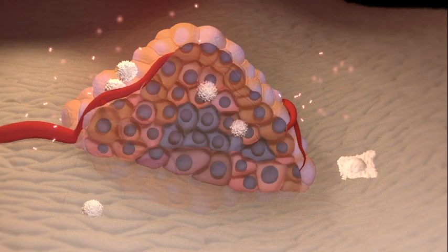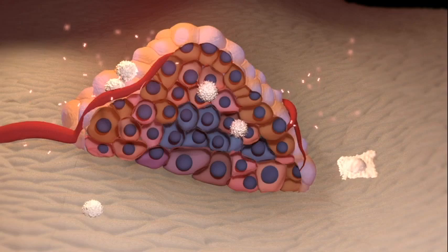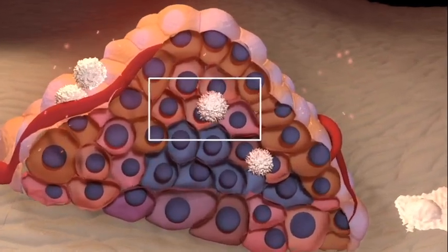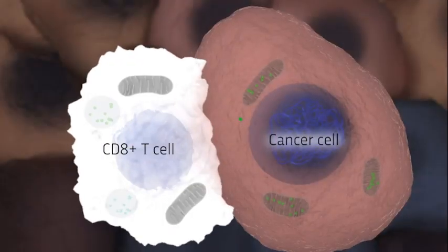For cancer cells in the body to be able to replicate and grow, they must be able to overcome the defense mounted by the immune system, including immune cells, such as CD8 T cells, which have evolved to kill them.